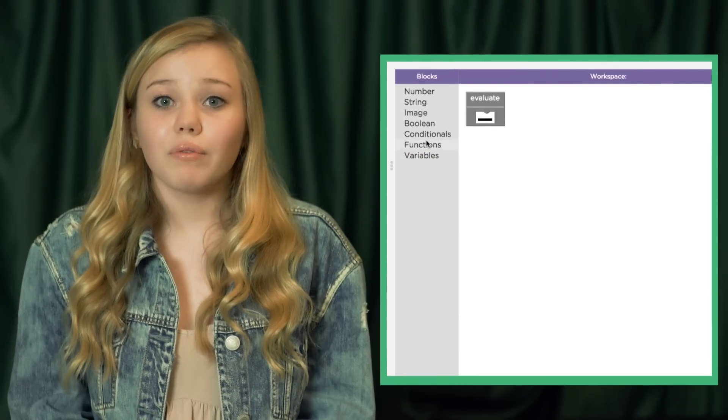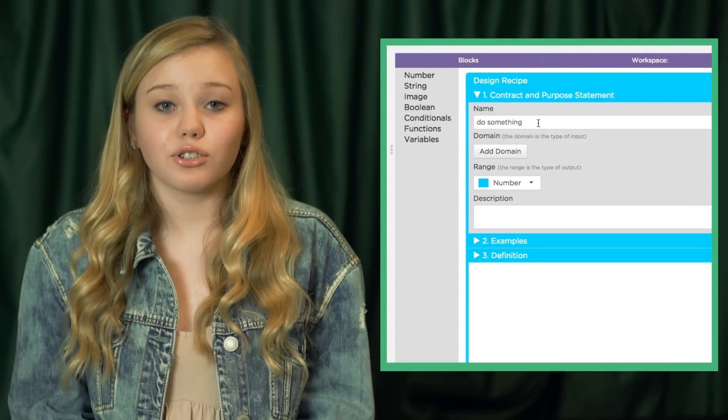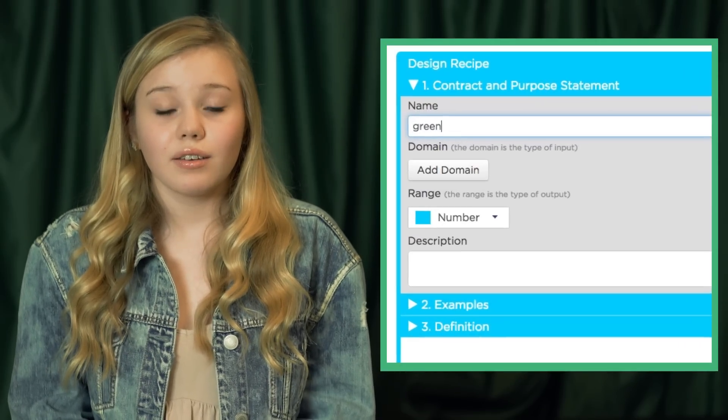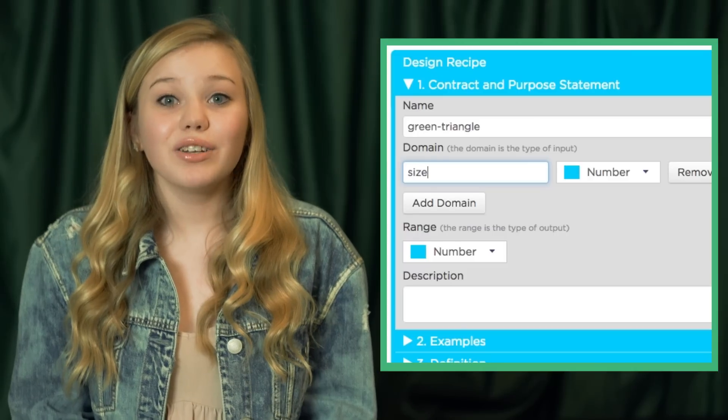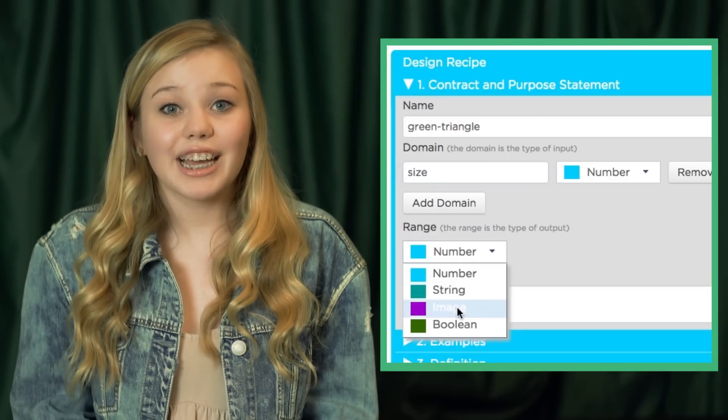Let's follow the design recipe for a simple function called green triangle that should take a number for size and return a solid green triangle with a given size. First, we'll write a contract that describes the general structure of our function. It should have a name of green triangle, a single number as its domain, and a range of image.